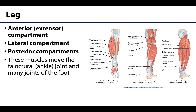In the leg there are also three compartments, but instead of a medial compartment there is a lateral compartment, which is by far the smallest — really made up of only two muscles, the fibularis longus and brevis, which we'll talk about in more detail in upcoming sessions.